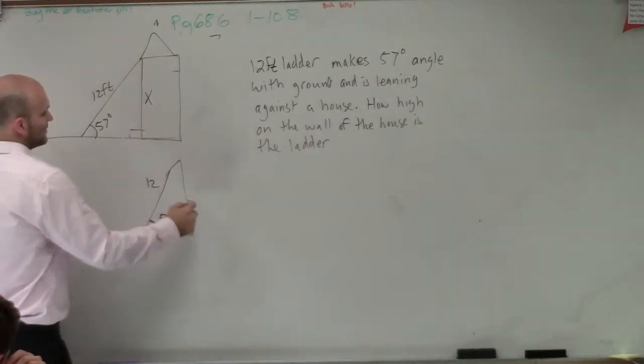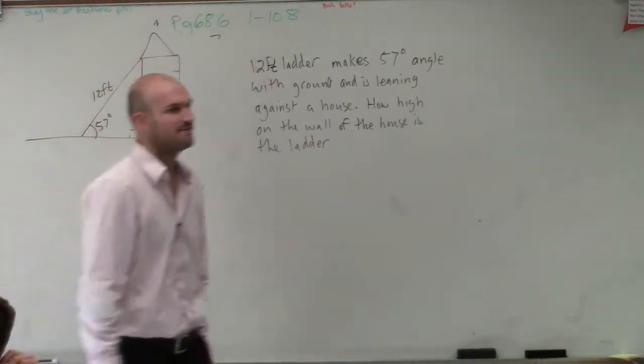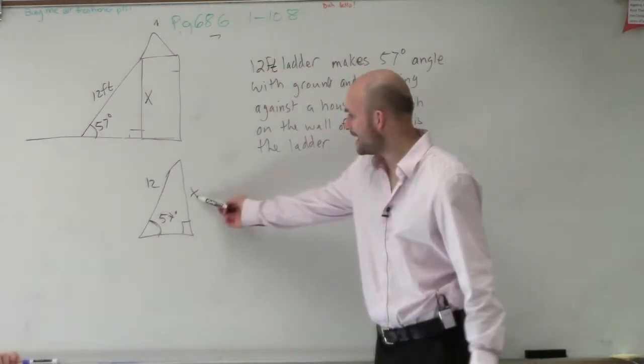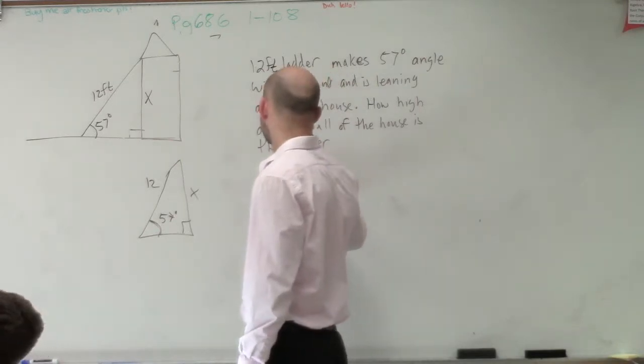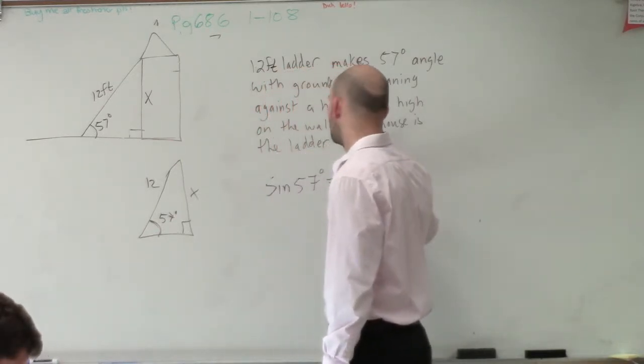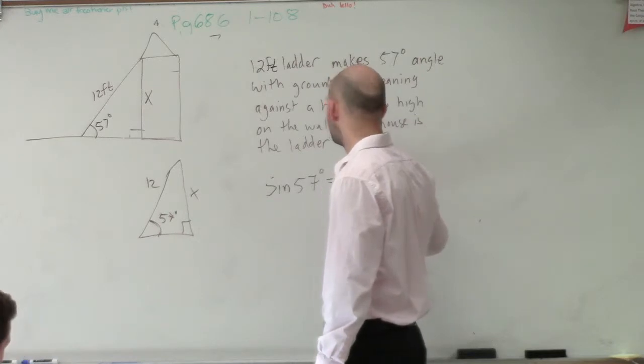So if this is 12 and this is x, which trigonometric function deals with the x and the hypotenuse? Sine. So I can say the sine of 57 degrees equals opposite over hypotenuse.